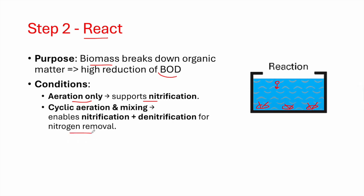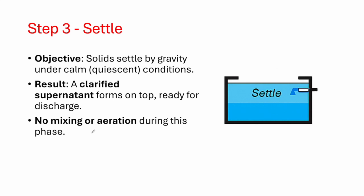In the settling step, the formed flocs settle down by gravity. Mixing and aeration are both stopped to create calm conditions so the flocs settle undisturbed. The result is a clarified supernatant water layer on top, ready for discharge, with the sludge concentrated at the bottom.